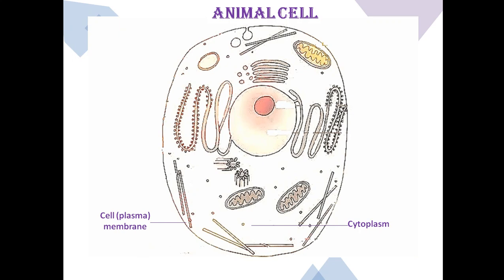Cytoplasm is a jelly-like fluid which is composed of salt and water. It is a home to many metabolic activities of the cell as it contains molecules and enzymes. It provides shape to the cell and thus enables all the organelles to remain in their position.